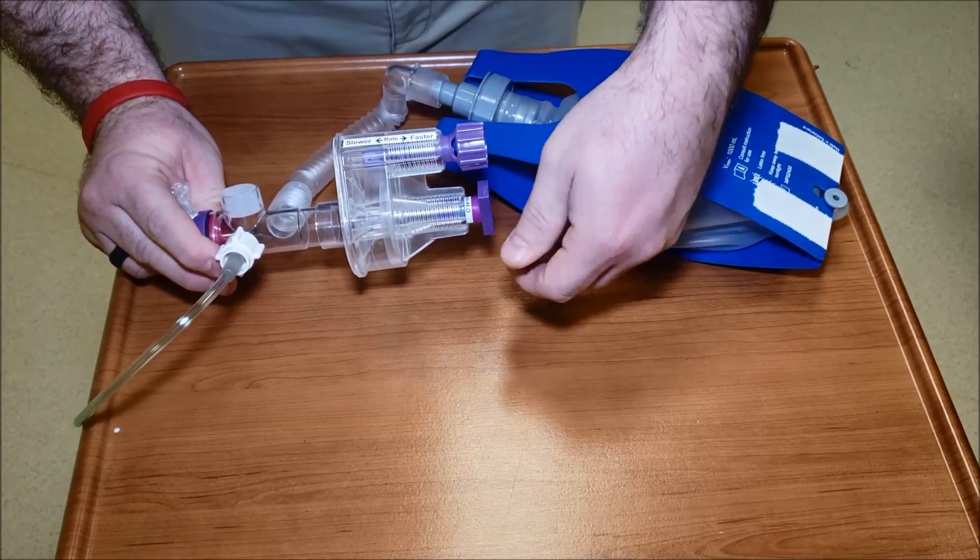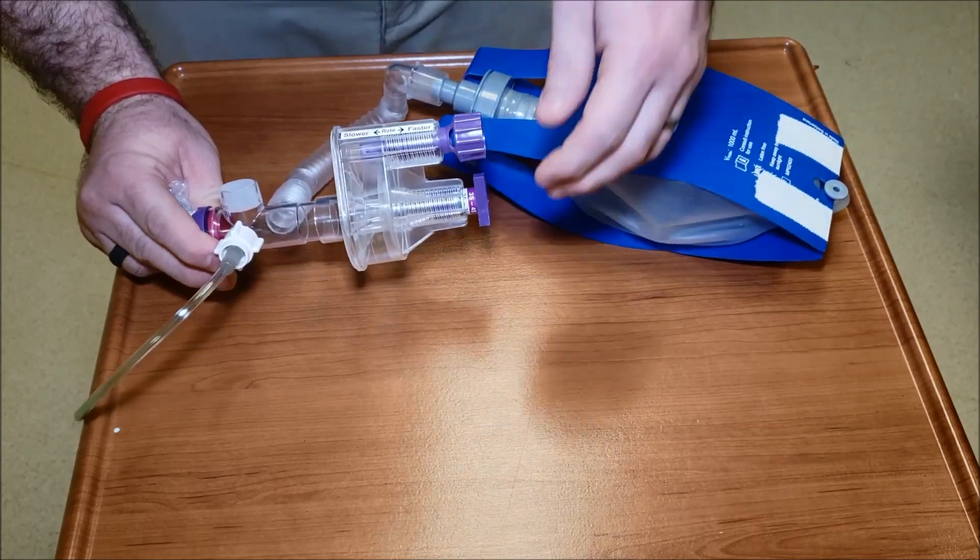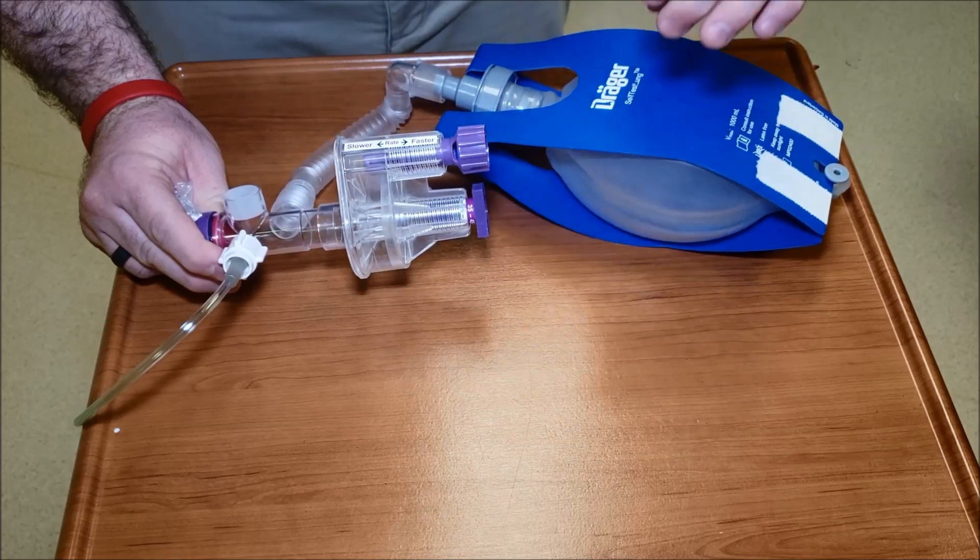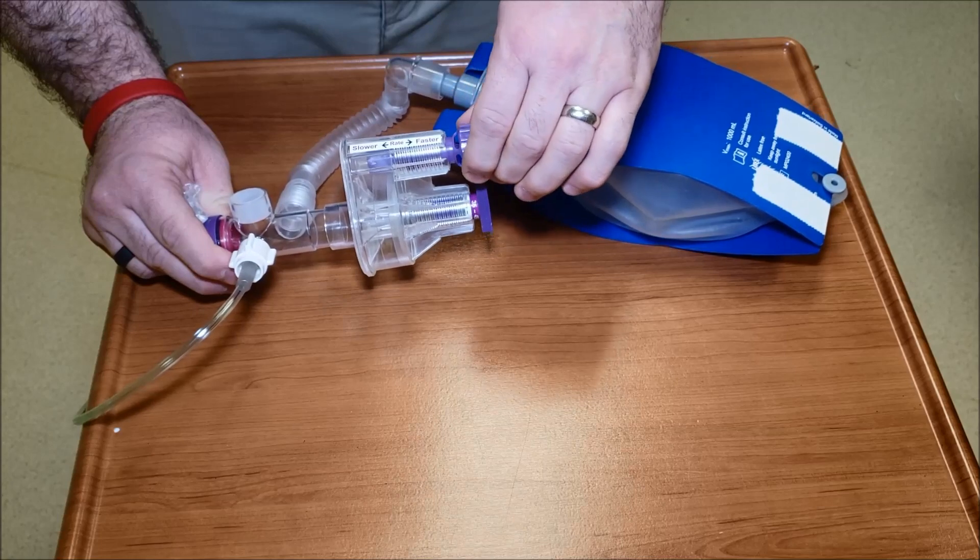Now if you're not getting adequate chest rise, you want to do your usual assessment that you would do, but then you can increase your inspiratory pressure. It's going to take a little bit more pressure work to cycle at that time. You're going to have to readjust your rate just a little bit.